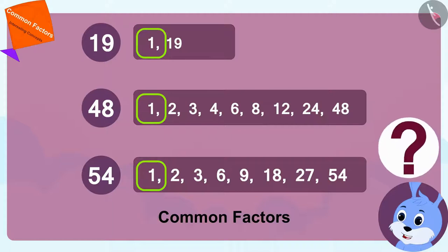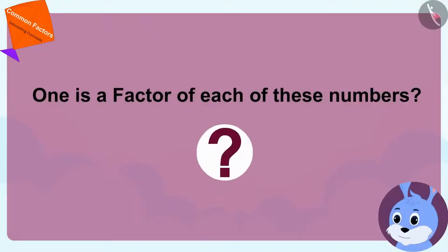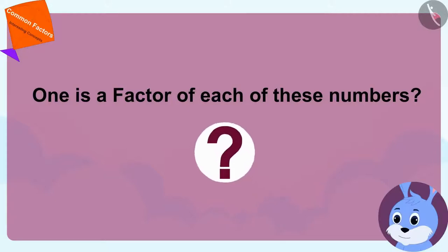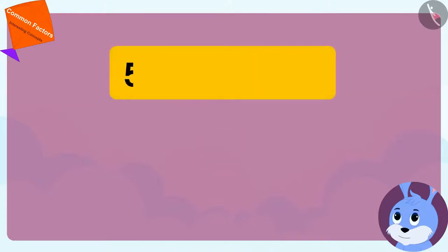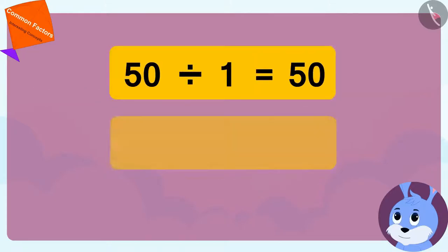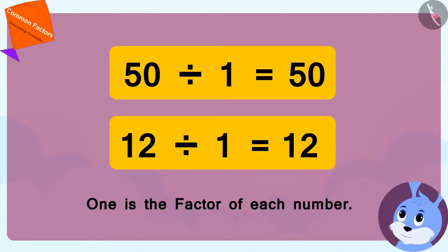How can it be possible that one is a factor of each of these numbers? Children, is what Bunny is saying correct? Is one a factor of every number? We can divide any number by one, so one is the factor of each number. Bunny's point is absolutely correct.